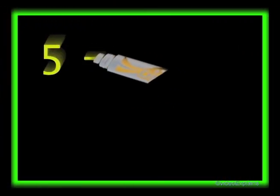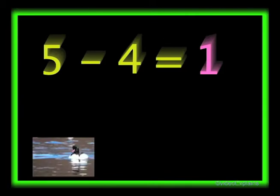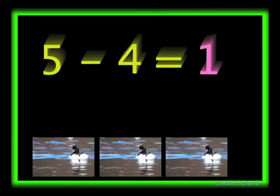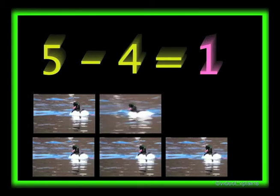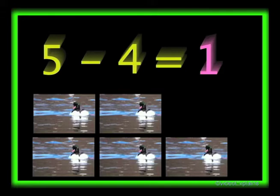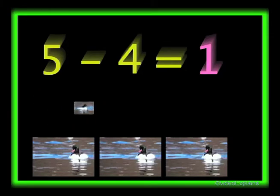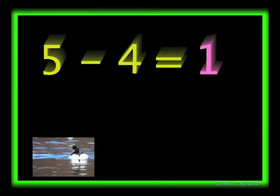Five minus four equals one. There are five ducks: one, two, three, four, and five. If four ducks swim away, then one duck will be left. One, two, three, and four. So five minus four equals one.